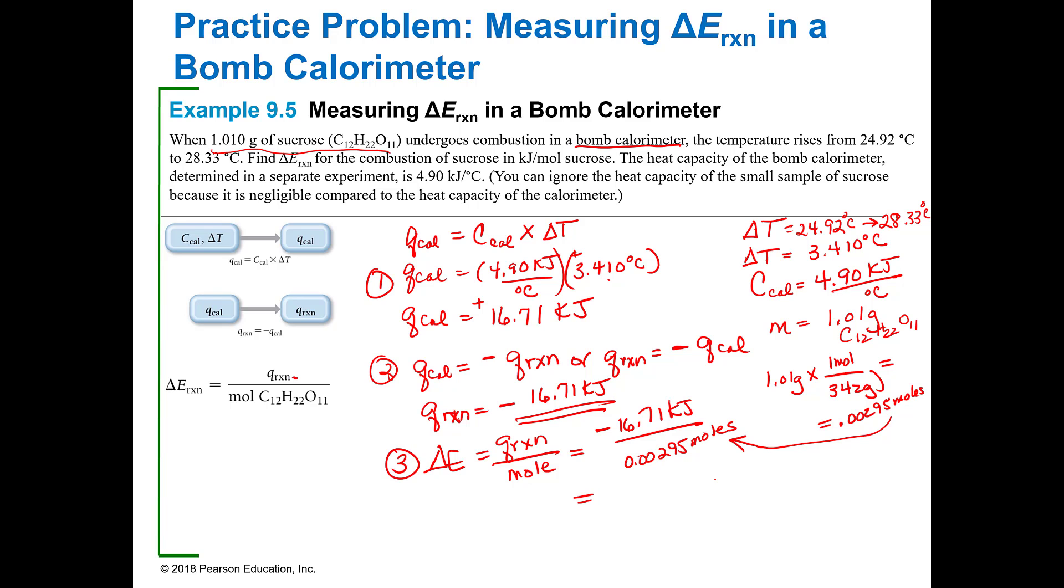And so that minus 16.17 divided by 0.00295 is going to give me a negative 5.66 times 10 to the third kilojoules per mole. And that is how you calculate the heat that is produced or the energy that is produced in a bomb calorimeter. And this is how they can actually come up with how many calories something is, is they burn it and they see how much energy it gives off.